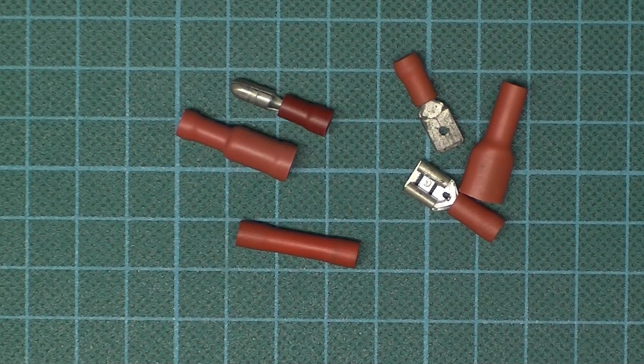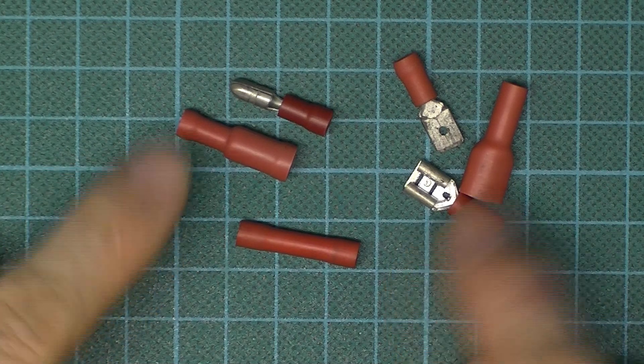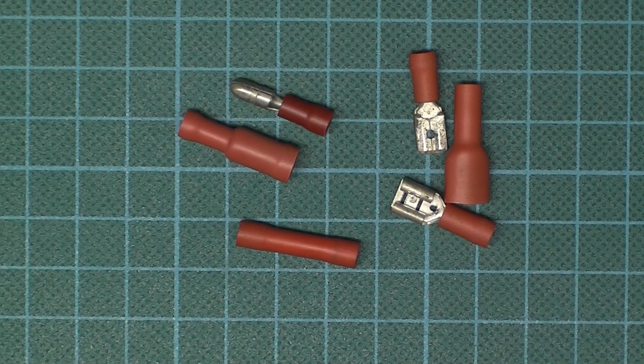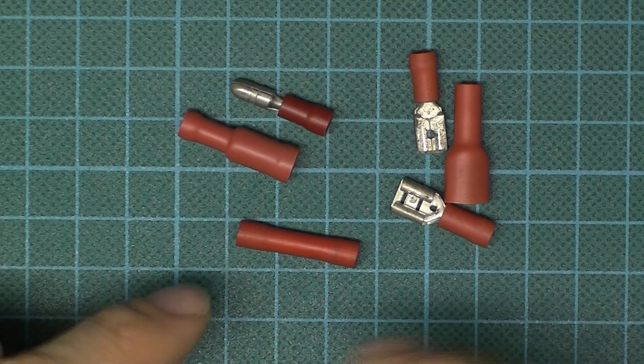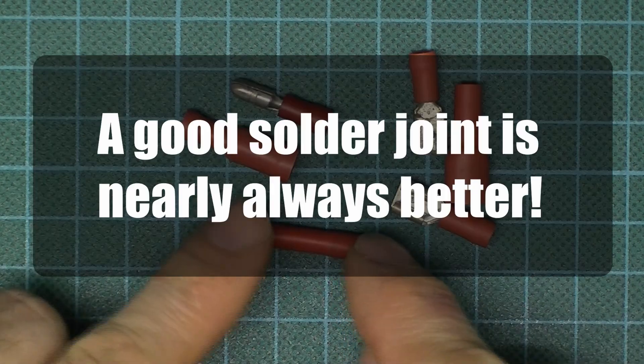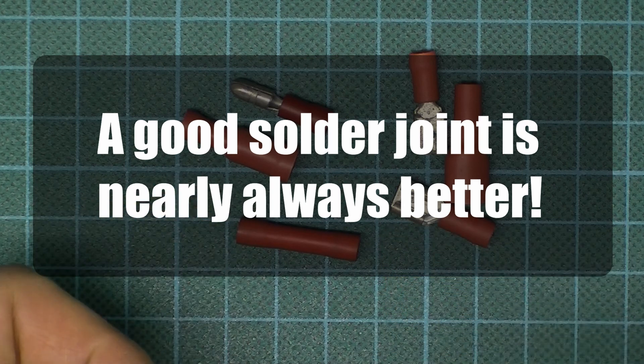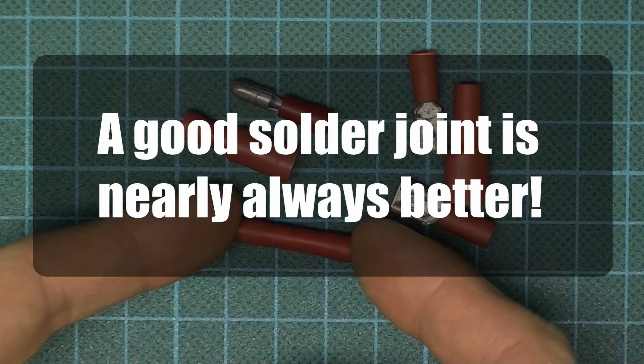Okay, here's a quick video for my students who might be considering using some crimp connectors to join wires. Generally speaking, I'm going to advise that if you're making a permanent connection, solder the joint, maybe put some heat shrink on it if you need it insulated.